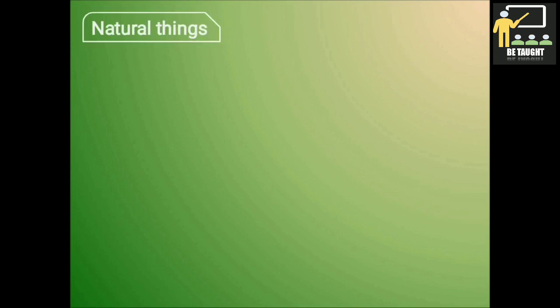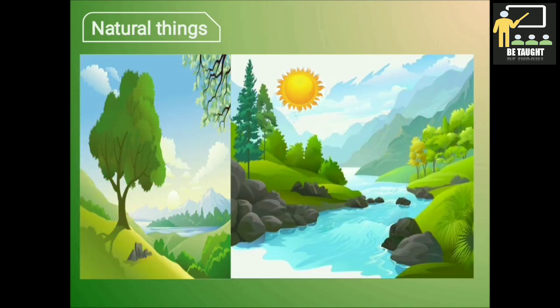In our surroundings, there are different things which are natural and few things which are made by man. Natural things are the things that are obtained by nature. Here you can see in the picture the trees, the sky, the rivers, the sun, the mountains, the rocks, the grass. All these are natural things.